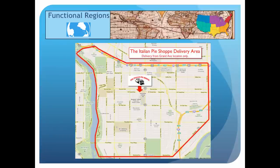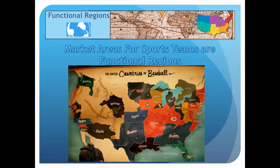Other great examples are delivery areas, such as those for a pizza shop. A map of where fans of baseball teams live also illustrates functional regions, though boundaries often cross state lines and some regions overlap with fans from multiple teams living within the overlap — so these maps can be a little bit deceiving.